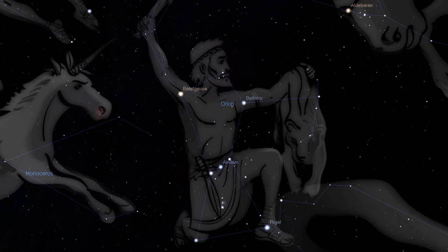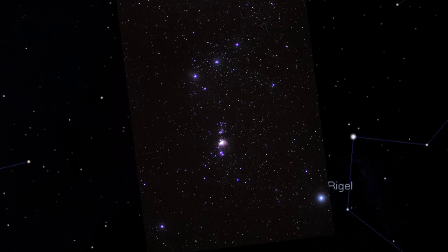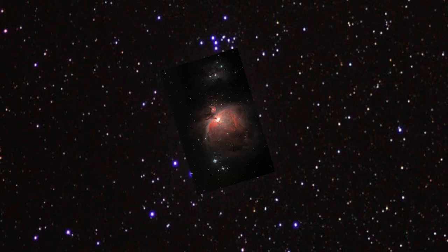This is Orion, a familiar constellation to most. With the naked eye, the middle light source of Orion's sword is little more than a fuzzy star. Gather light with a long enough exposure, and something more spectacular appears.